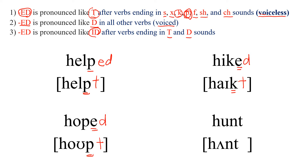Next one: HUNT. Since it ends in a consonant, we put ED to make it past. This is a T ending, so we add ED here and read it: HUNTED. You can even say HUNTED.